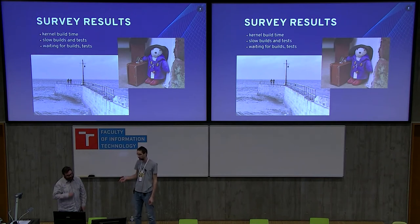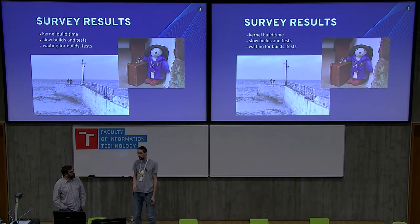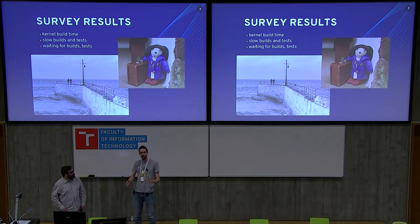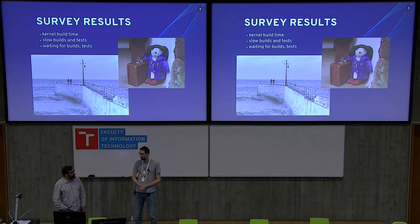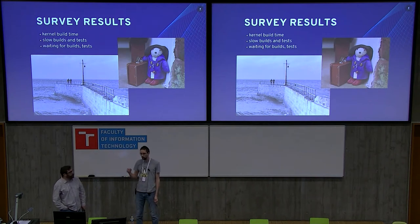Next on the list from the survey results was kernel build time. I was checking it out yesterday — it takes six hours to build the kernel in Fedora. So imagine you're fixing something, you have a patch, you include it, you build it, and then in six hours you might get the results. With kernel build time, there's also slow build time from other projects — components which take very long to build or even test.